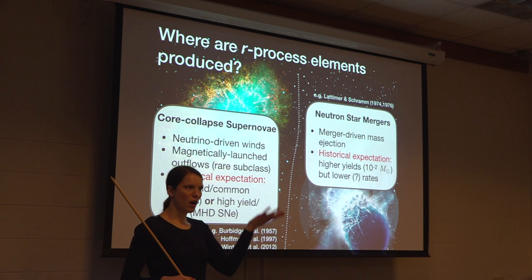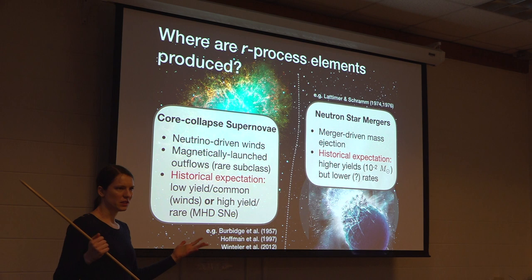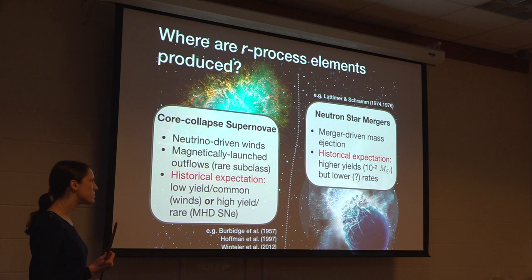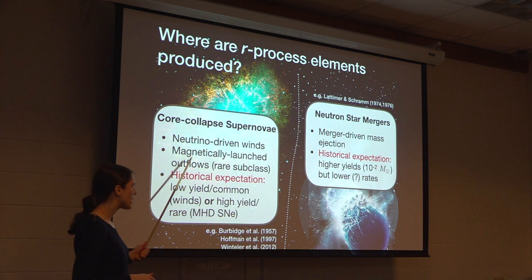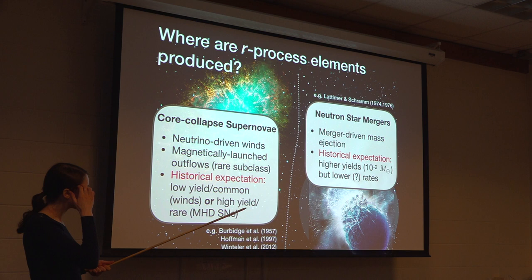If you have some R-process yield and some rate, you can vary those inversely and they work out. If you look at a common event like an ordinary core collapse supernova, you obviously need to have lower amounts of R-process produced in each event, but that was what the simulation suggested. In contrast, rarer supernovae or neutron star mergers would have higher yields but lower rates in a way that balanced each other out.